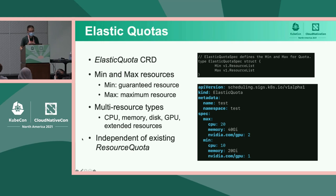The right side shows a simple example. Here is an elastic quota named 'test', associated with a namespace 'test'. It's quite straightforward — it specifies maximum and minimum resources in terms of CPU, memory, and GPU. Throughout my presentation I'm using GPU as an example, but it can apply to any type of resources like CPU or memory.